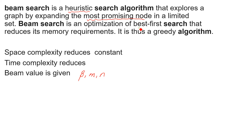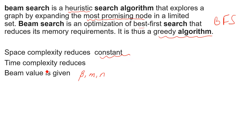Beam search is an optimization of best-first search — it is a modification of the best-first search we discussed in the last lesson. The modification reduces memory requirements. It is a greedy algorithm, meaning it follows the route with the lowest heuristic or estimated value. Key features: space complexity is reduced to constant, time complexity decreases, and the beam value is denoted by beta, or m or n in some books.